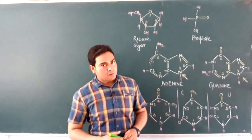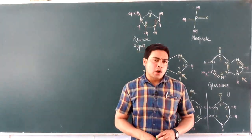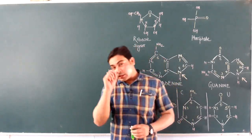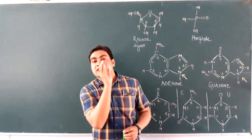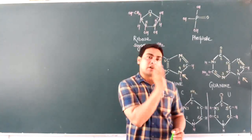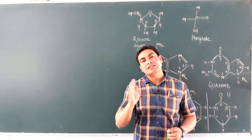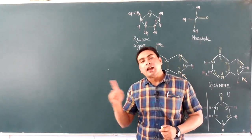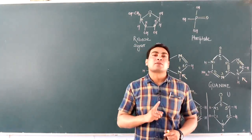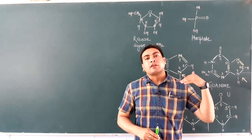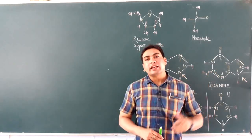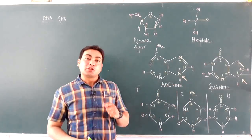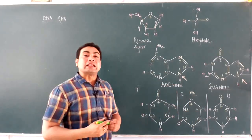One important thing to note is that DNA is also found in small amounts in certain organelles like mitochondria and plastids. This is called extra-nuclear DNA or organelle DNA. Now we are going to discuss about the chemical structure of DNA.